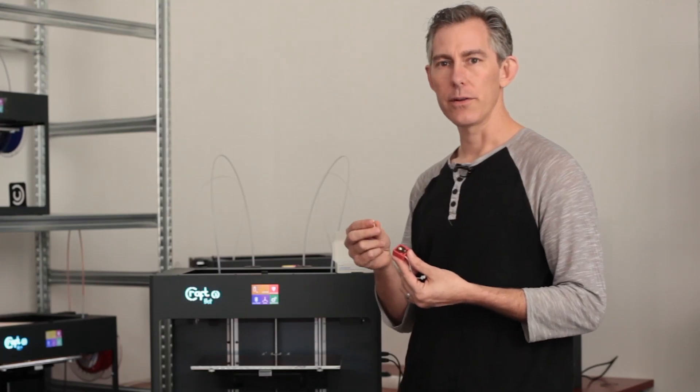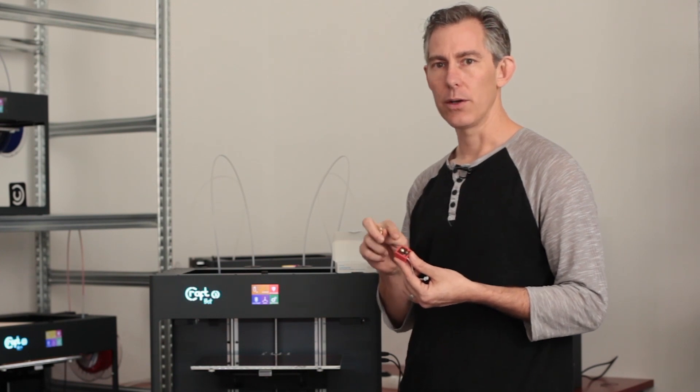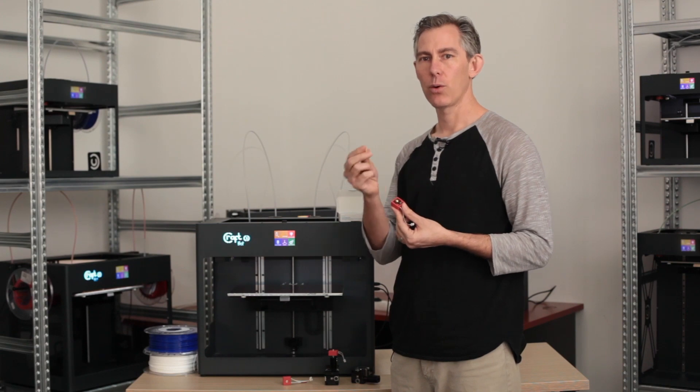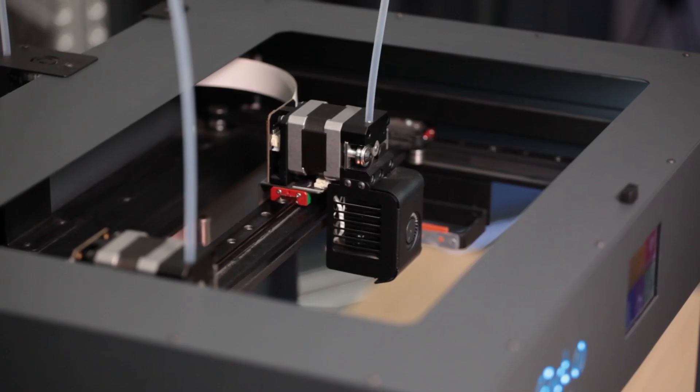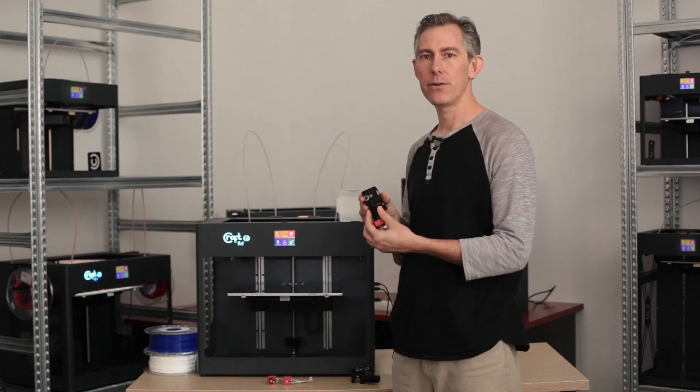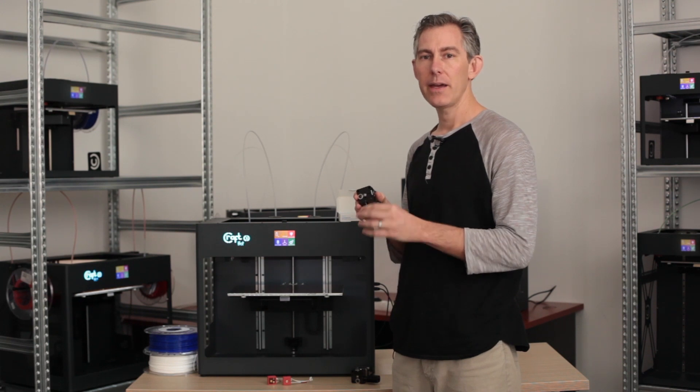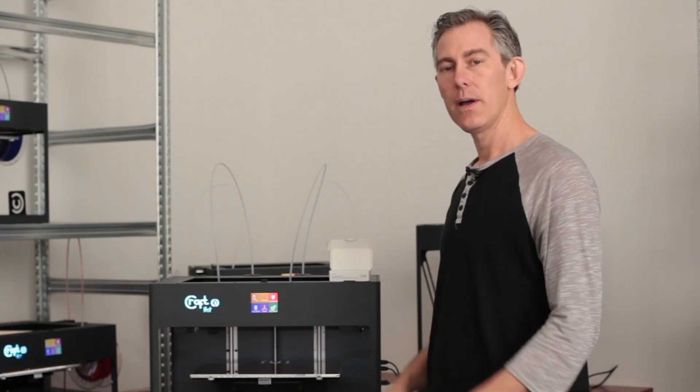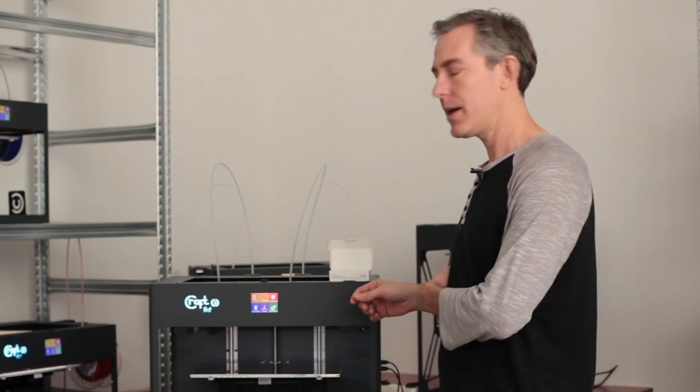Because the new nozzle is longer than the old version, it won't work in the old heat block. You'll want to upgrade your heat block in order to use the new nozzle. Even with all the new improvements that we've added to the new CraftBot 3 hot end, it's still compatible with your old motors so you'll be able to swap it in very easily. Now let me show you how you install your new hot end.